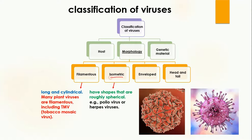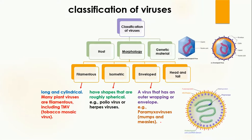The second morphological type is isometric virus. 'Iso' means same and 'metric' means dimension, so the shape of this virus is the same from all sides — roughly spherical. Examples include the polio virus and the herpes virus. Here you can see that no matter which direction you look, they have the same structure or dimension.